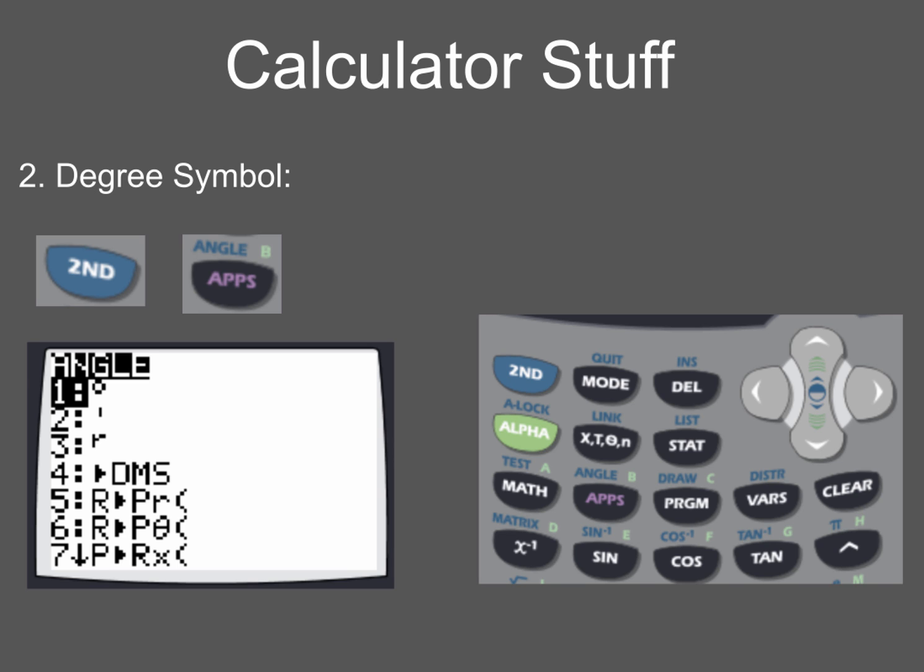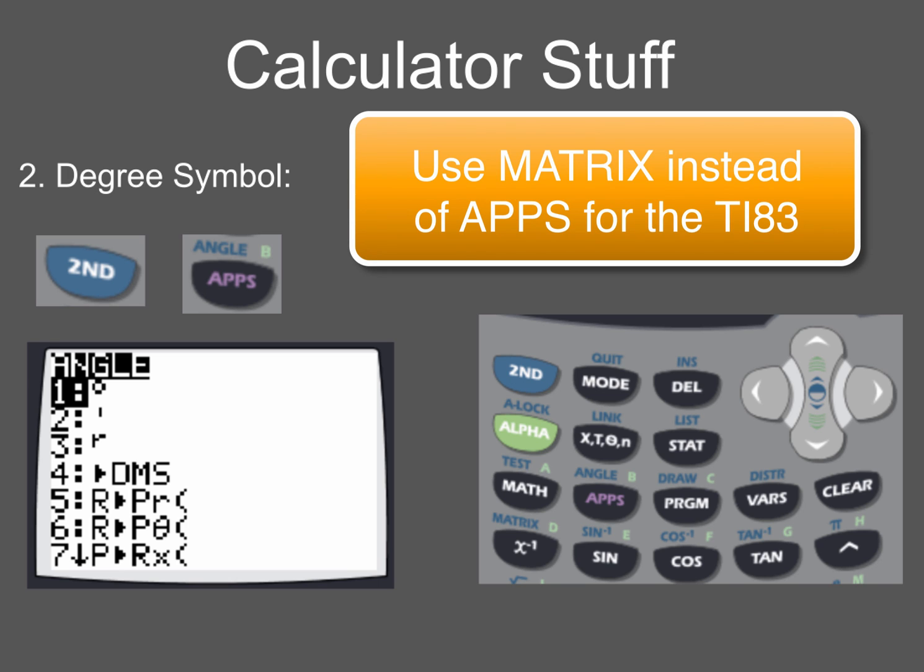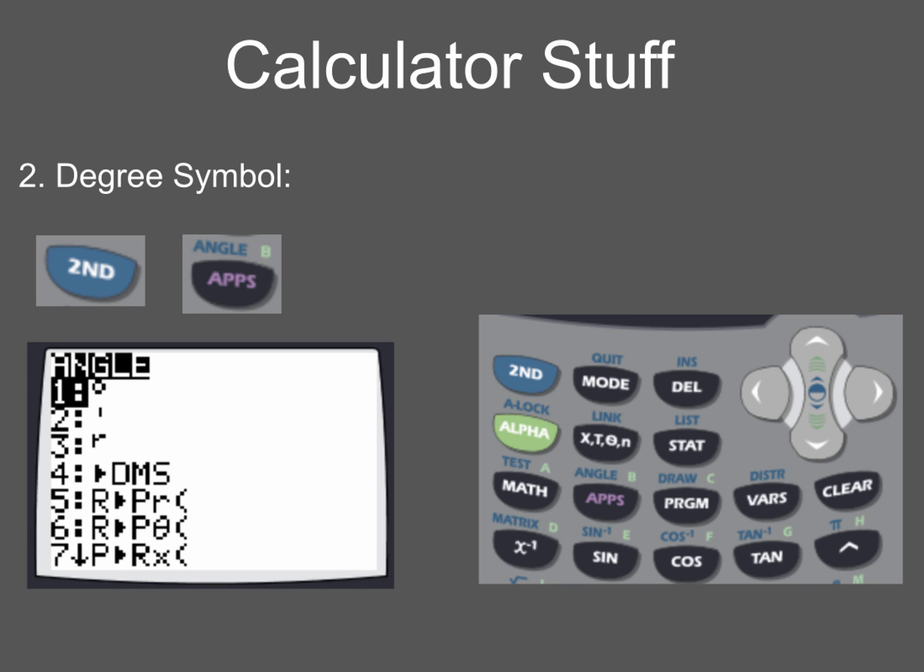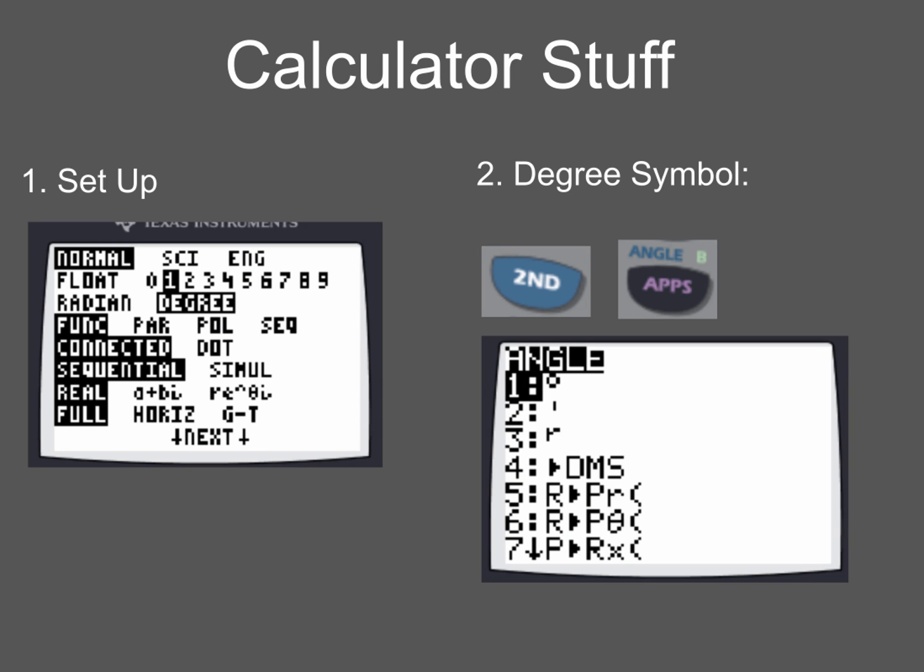Now if you have a regular TI-83, not a TI-83 silver edition or 83 plus, but a regular TI-83, you don't have an apps button. What you'll have to do is hit the matrix button instead of the apps button. So you would still hit second, but then you hit the matrix button. So now that we've got our calculator set up and we know how to find a degree symbol, let's take a look at some old stuff from classes past.